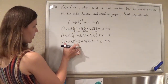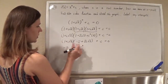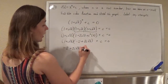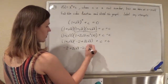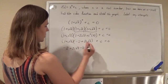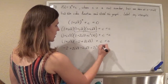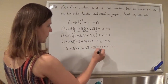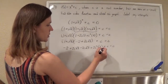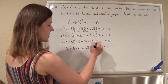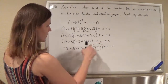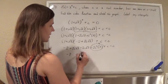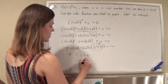Keep FOILing. 1 times negative 2 is negative 2, then plus 2i√3, then minus 2i√3, and then plus 2i² times 3. Since i² is negative 1, 2 times 3 is 6, so that whole term is negative 6. So we have negative 2 minus 6, which is negative 8. Those middle terms cancel out.